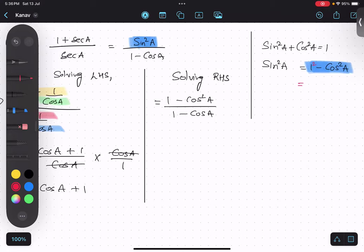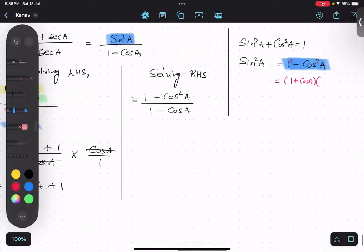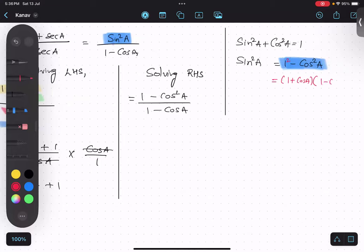So, it can be written as 1 plus cos A multiplied by 1 minus cos A. So, I am going to do that thing. 1 plus cos A multiplied by 1 minus cos A upon 1 minus cos A. Can you see that? This thing is exactly same.